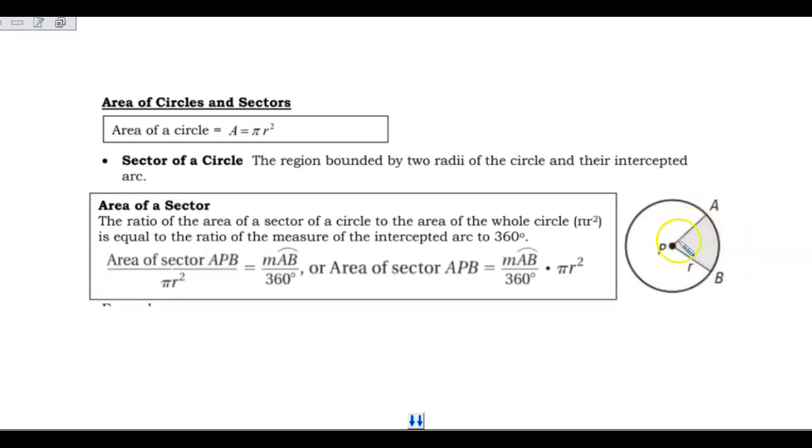They want to find the area of this gray area section. We're going to take the measure of arc AB and divide it by 360, and multiply that times pi times radius squared.